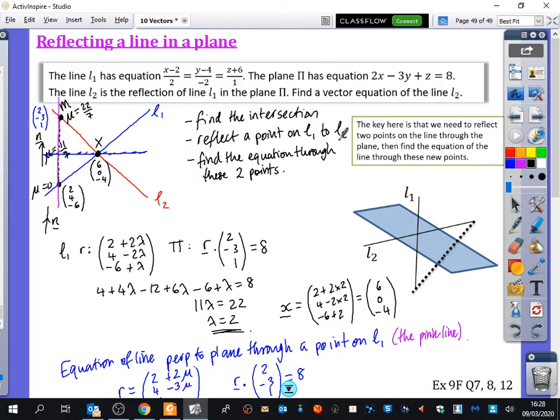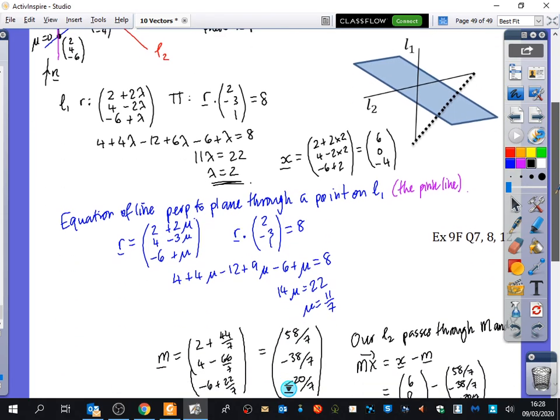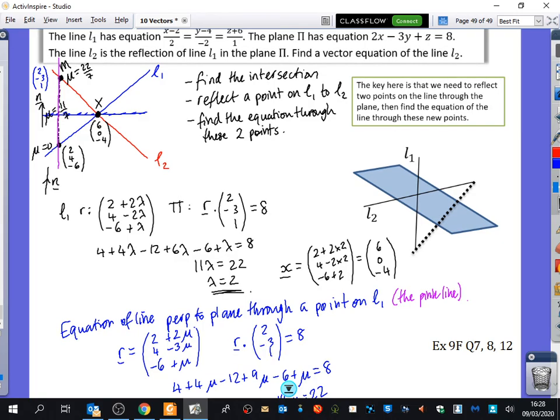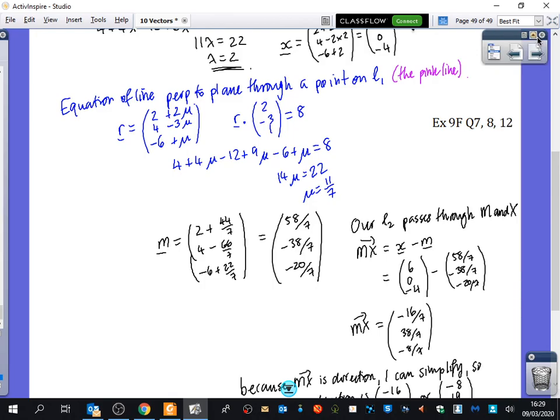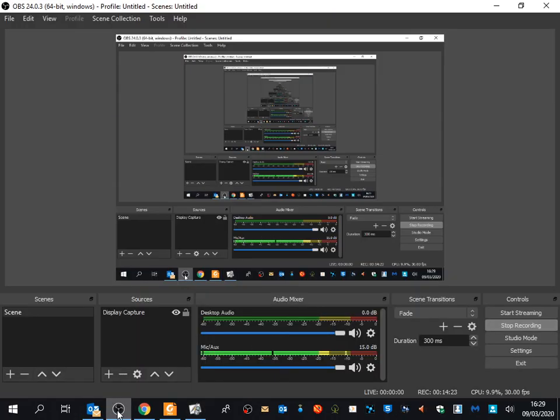We found the intersection, then found the equation of the line to do the reflection. We found μ was 11/7, then doubled it to 22/7 to find M. Then we found the direction of that line and came up with the equation. The questions you'll do are 7, 8, and 12 from Exercise 9F. You need to be perfect with your skills ready for next Monday when we do exam questions. That's it, we're done with vectors.